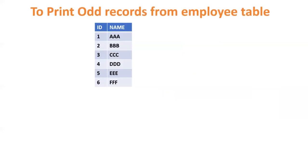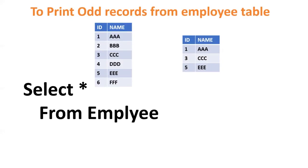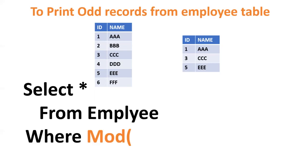Next, from the employee table, we need to print odd records. By using a similar query we get all records, but we want only odd records. Using MOD: MOD(1,2)=1, MOD(3,2)=1, MOD(5,2)=1. So the required output with only odd records can be achieved using MOD with WHERE MOD(id, 2) = 1.